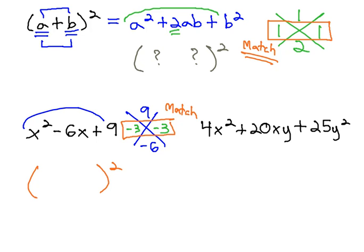A nice little trick to help us factor is we know the first and last terms came from squaring the first and last terms. The opposite of squaring is taking the square root. The square root of x squared is x, and the square root of 9 is 3.